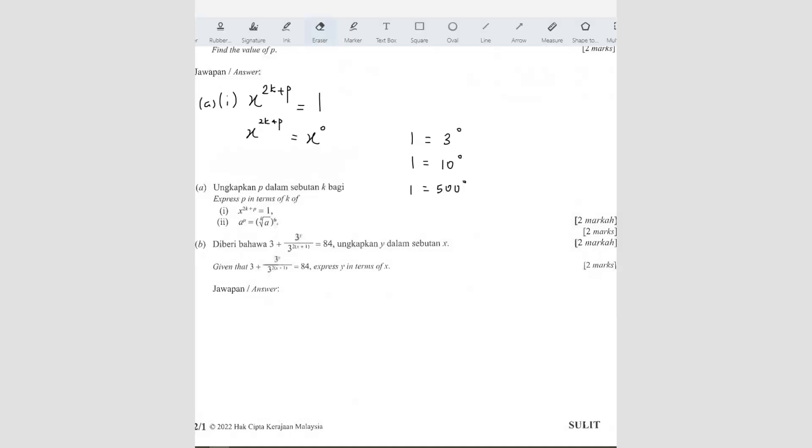Okay, once you do that, then you can solve already because now both of them are the same base. So because they are the same base, we can say that 2K plus P equals to 0. So you want to express P, right? So P is equals to negative 2K. Okay, pretty straightforward. Now, the second one.